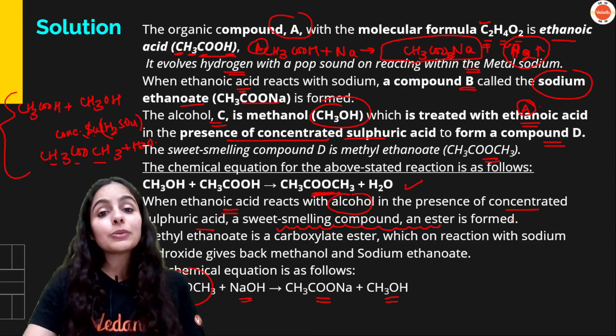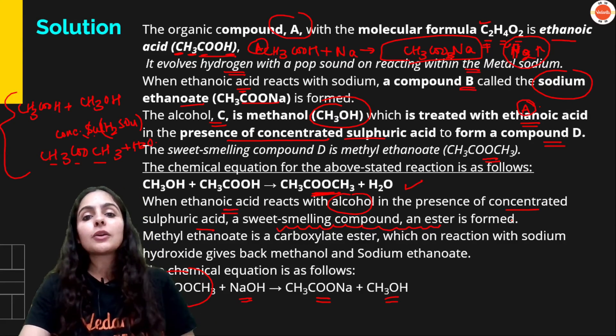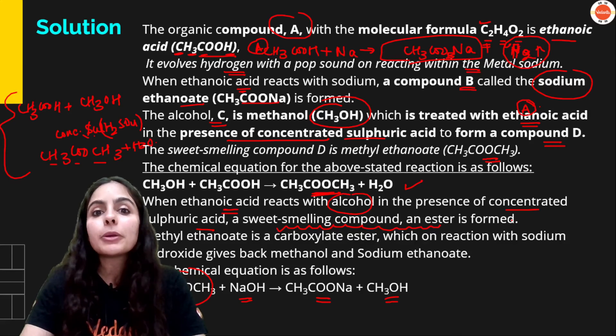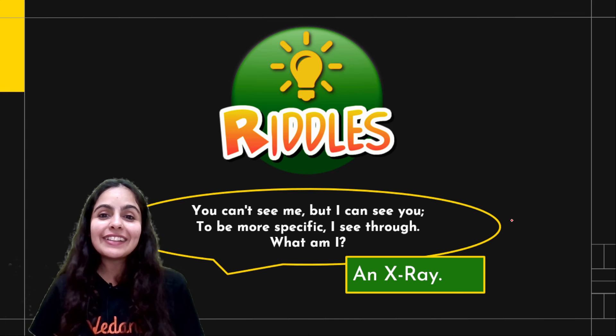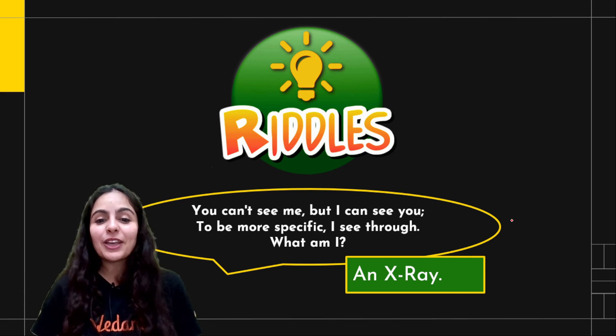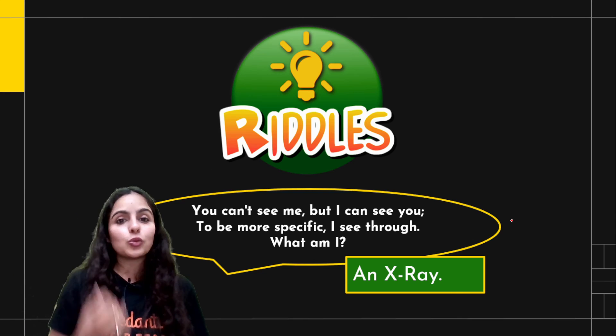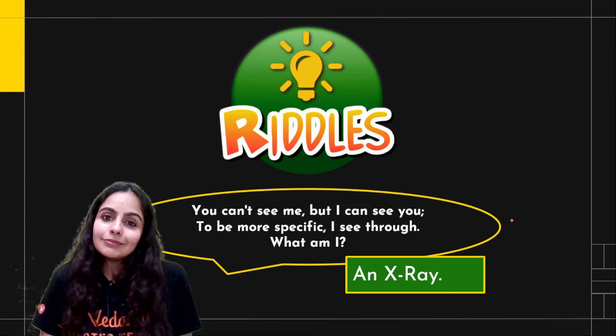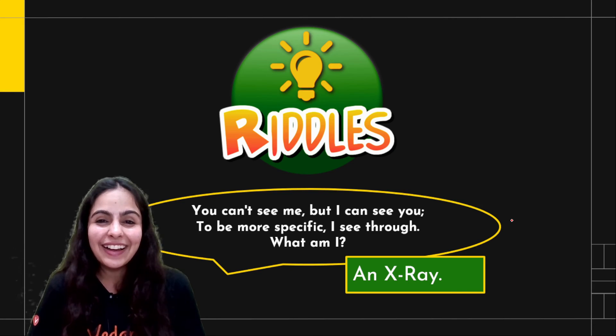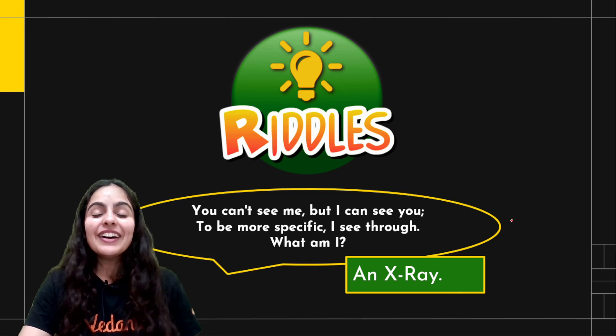So that was it from my side. These are top 3 questions, case-based questions. These questions are very common in your paper. Can't see me but I can see you. To be more specific, I see through. Like me dekhte na, that's see through. So what am I? X-ray. Funny, right? You can ask this to your friends also.